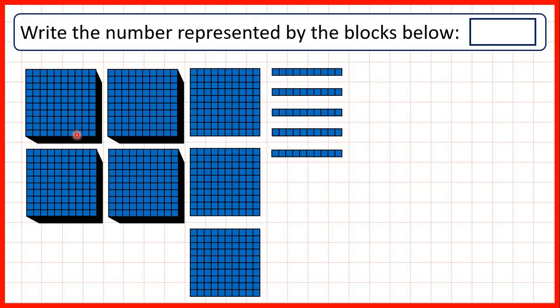Now here, we have four thousands, three hundreds, and five tens. But we don't have any ones, so we need to write a zero.